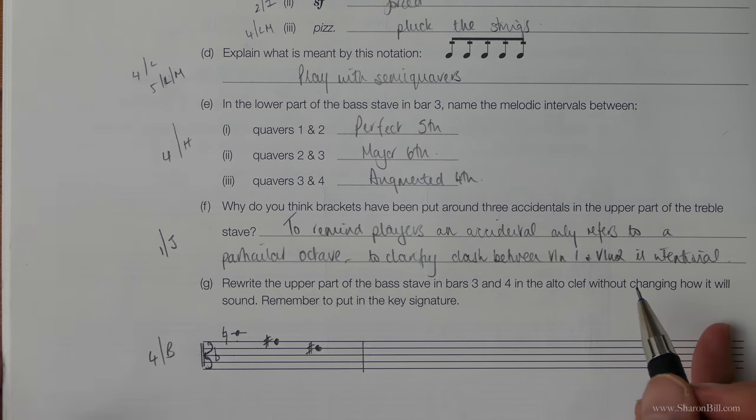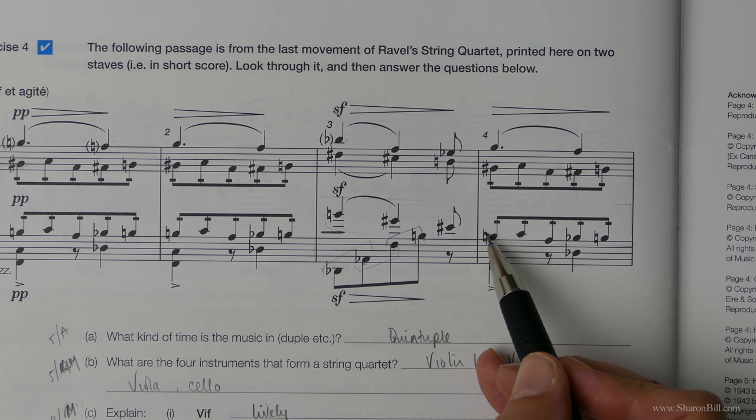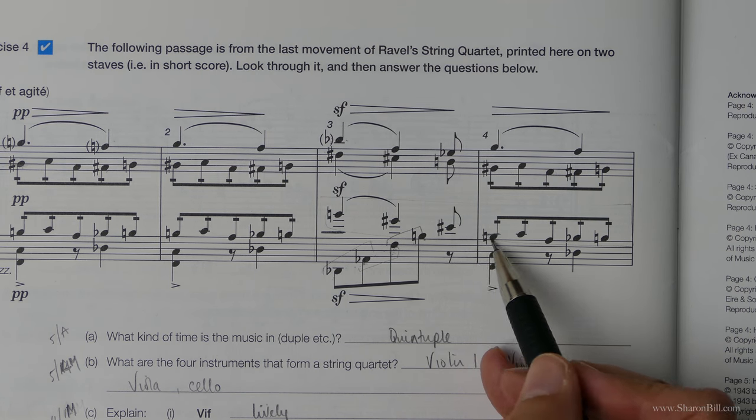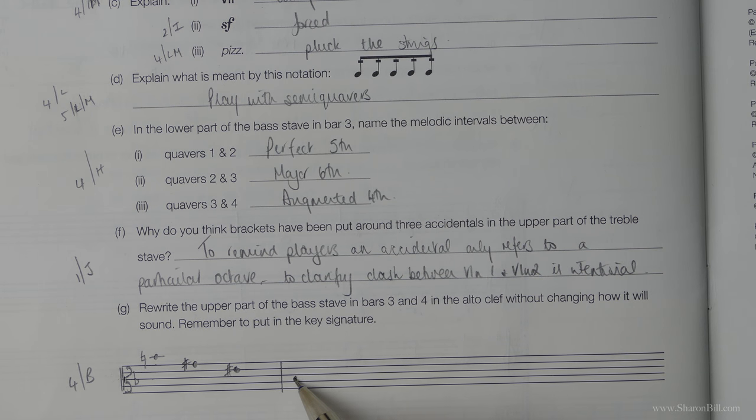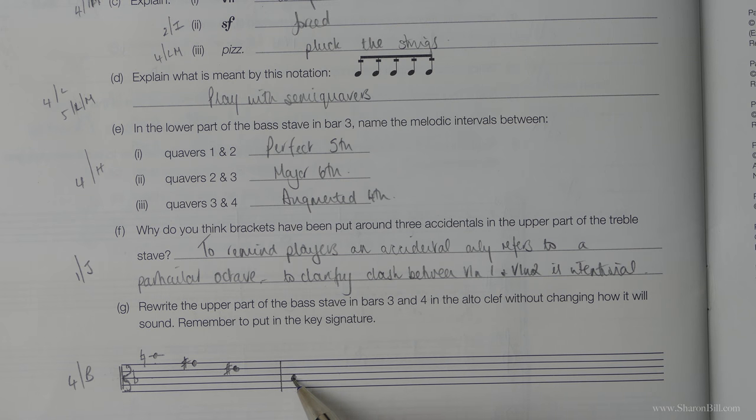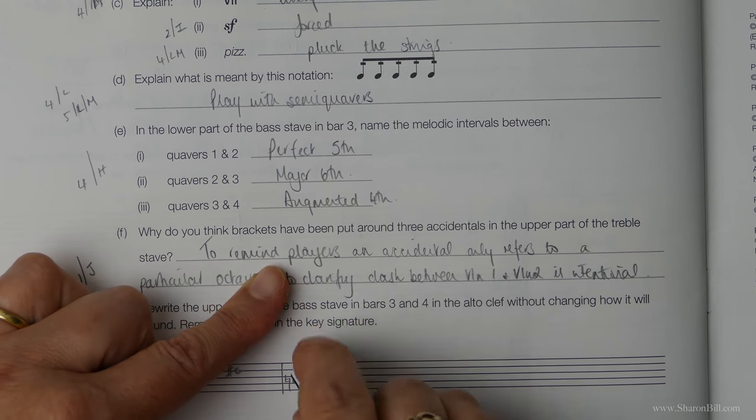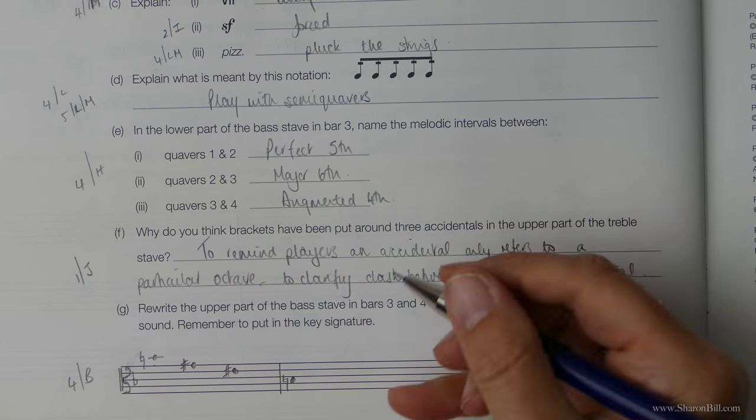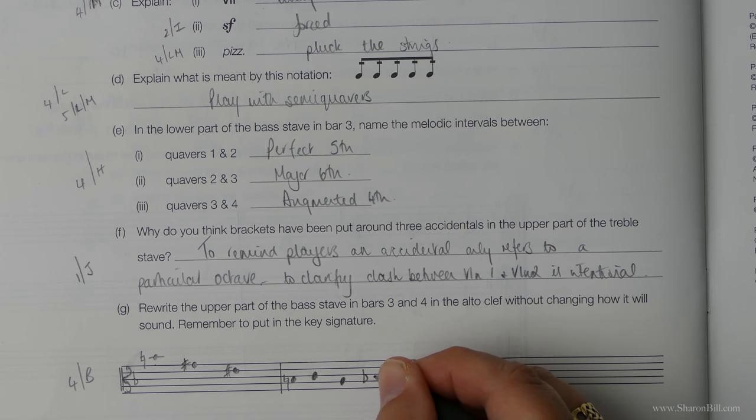And then we're now going to be, if you notice, we are one step below middle C. And so we're there. We need a natural sign. Up a step. Down a third. Back up a step. But this time the flat is back.